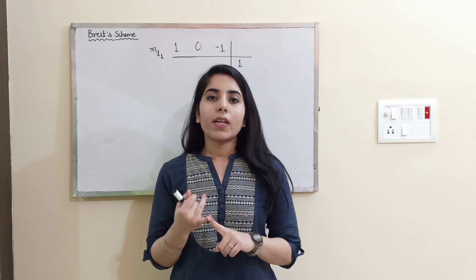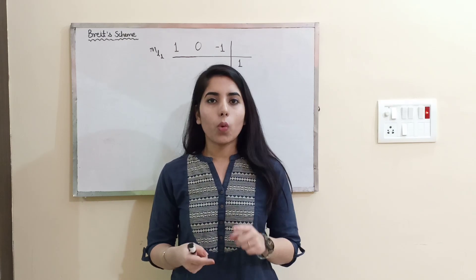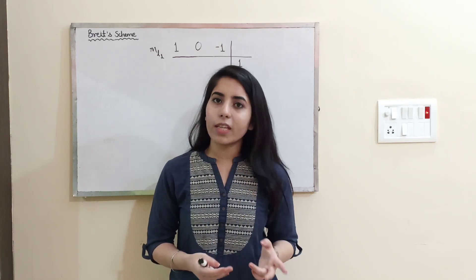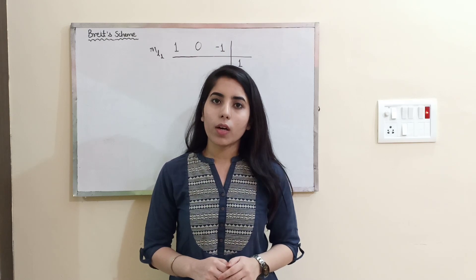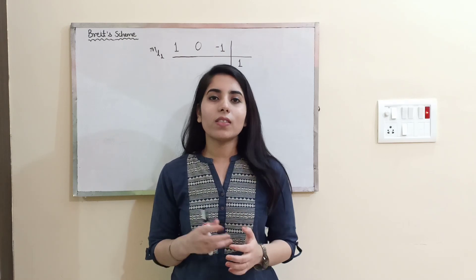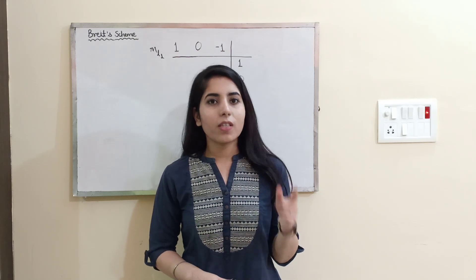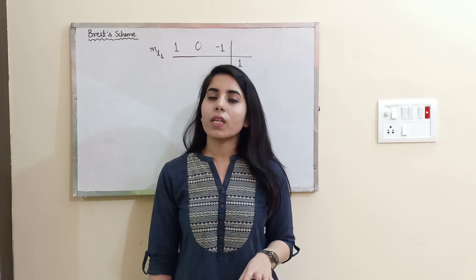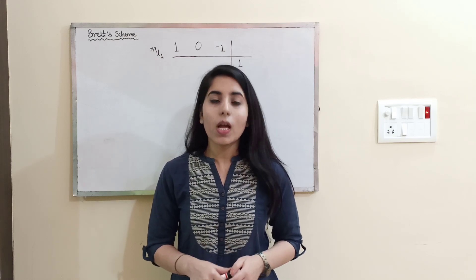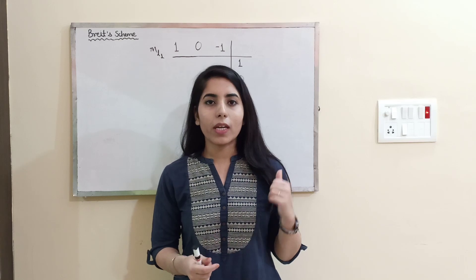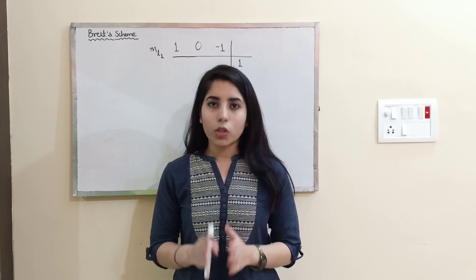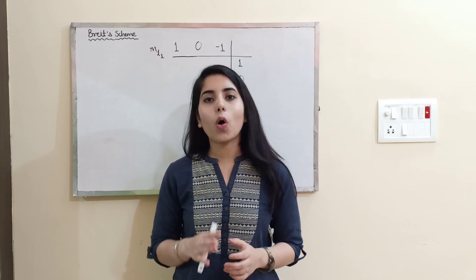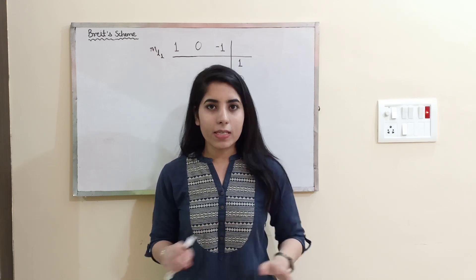There are mainly two types of questions we can expect: one corresponding to the non-equivalent electron case and the other corresponding to the equivalent electrons case. Right now in this video I am going to talk about the Bright scheme — how we are going to take the steps and find the spectroscopic terms. After watching this video till the end you will be able to know about each and everything very clearly and solve all related questions very easily.